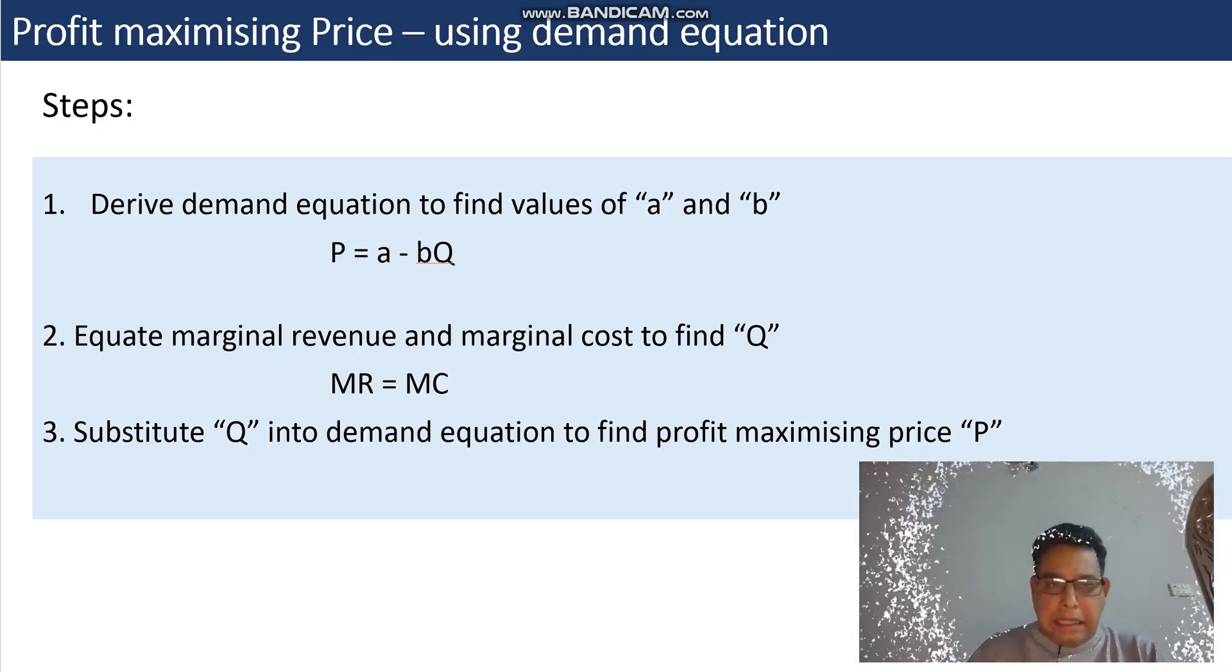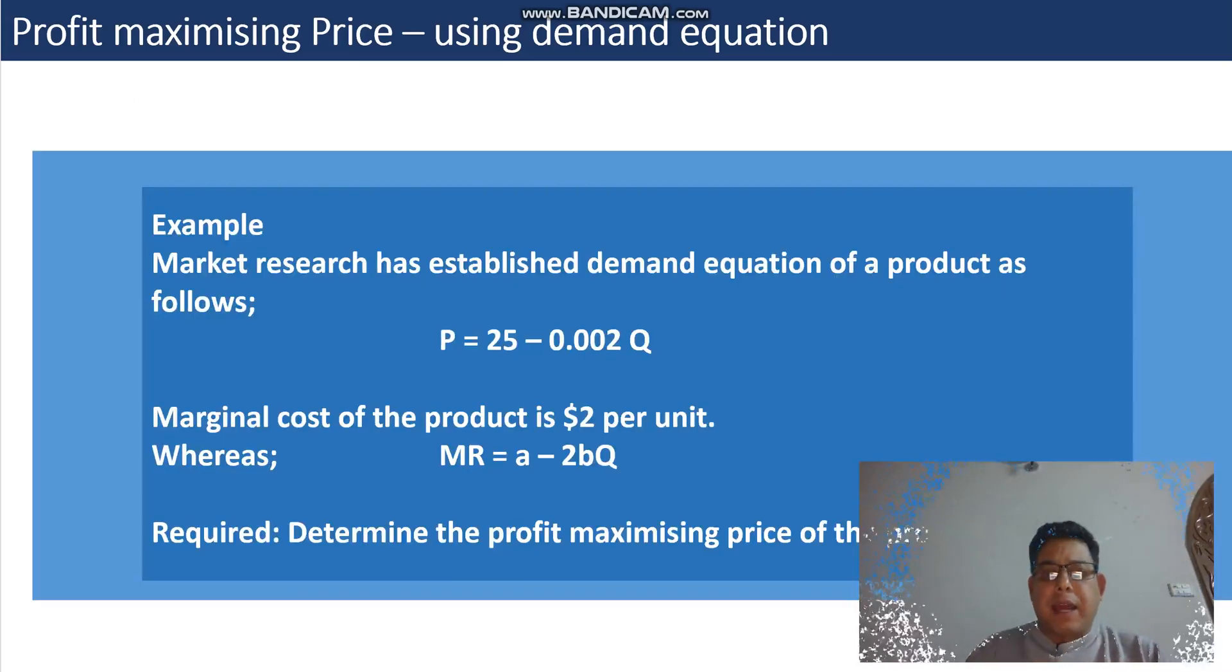Let's look at a short example. Market research has established the demand equation of a product as follows: P = 25 - 0.002Q. In a separate session we have already learned how to calculate the a and b values, so I'll focus on this part.